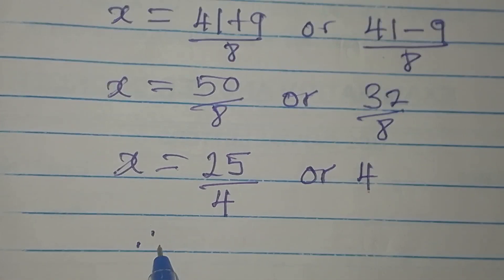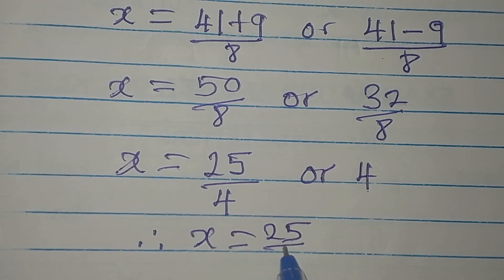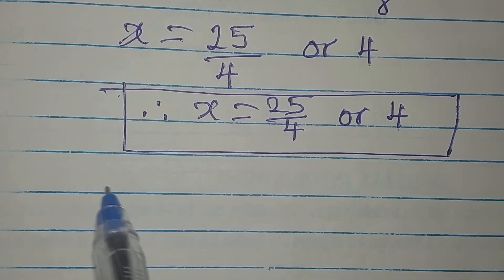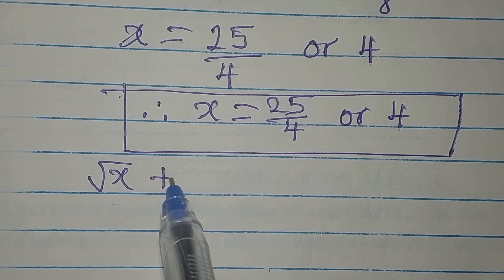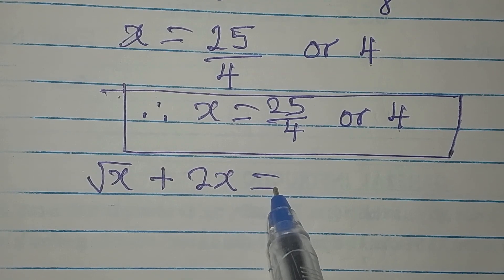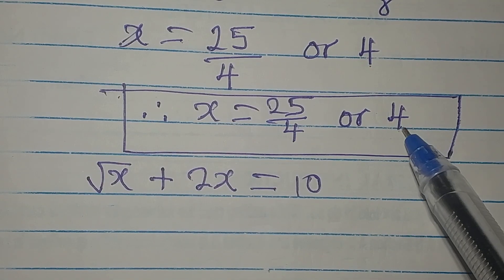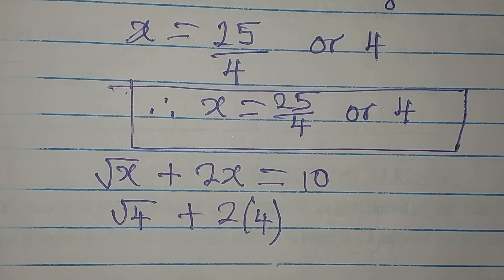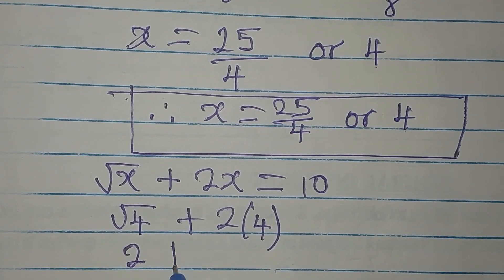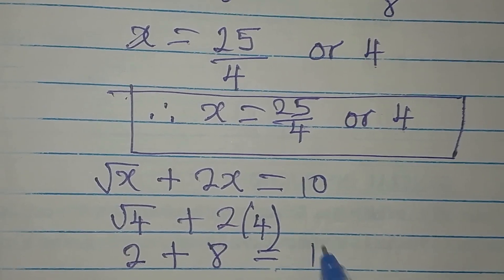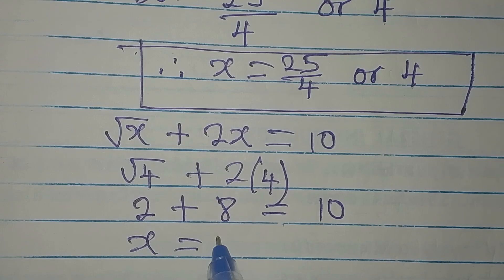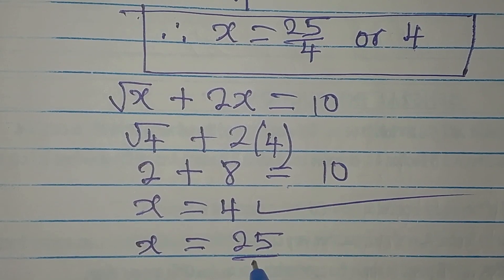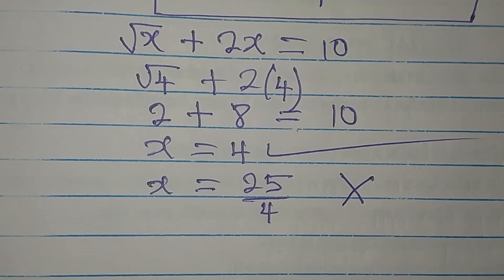The question is: do both values satisfy the original equation? Let's check with x equals 4: square root of 4 plus 2 times 4 equals 2 plus 8 equals 10. Yes! So x equals 4 satisfies the equation. This means x equals 25 over 4 does not satisfy the equation. Therefore, the solution is x equals 4.